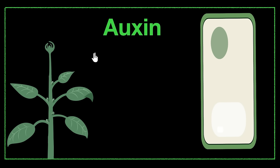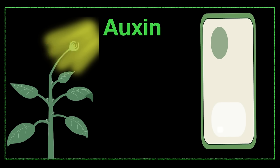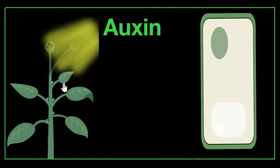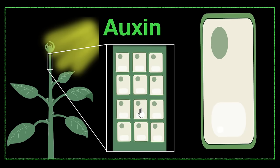But that's not all. Auxin is also important for phototropism. Remember what phototropism is? It's where when you shine light on a plant, the plant automatically turns towards that light. We've talked about tropism in great detail in previous videos. Anyways, how does that happen? This also is due to auxin. Let's zoom into a small section of the plant and see what happens once auxin comes there.